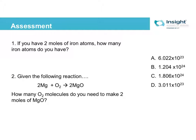Some questions that you may run into: If you have two moles of iron atoms, how many iron atoms do you have? This is directly using that list we had before. It's going to be 2 times 6.022 times 10 to the 23rd, so that's going to be B.